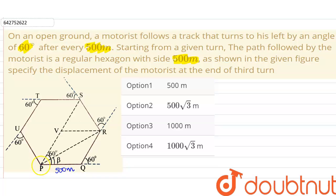Then he goes a distance of 500 meters and turns to its left by an angle of 60 degrees. After making another turn, it reaches the point S. So we have to find what will be the displacement of the motorist going from the point P to S.